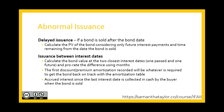Now, considering what could be abnormal: bonds may be sold after the bond issuance date. If that happens, we would calculate the present value of the bond considering only the future interest payments and the time remaining from the date the bond is sold. If there was an issuance between interest dates, we would calculate the bond value at the two closest interest dates — one in the past and one in the future — and then prorate the difference using months. The first bond discount or premium amortization recorded will be whatever is required to get the bond back on track with the amortization table, and the accrued interest since the last interest date is collected in cash by the buyer when the bond is sold.